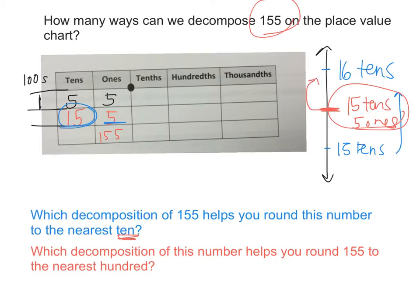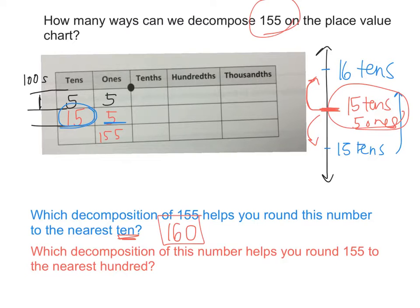Is one hundred fifty-five closer to sixteen tens or closer to fifteen tens? Neither — it's right in the middle. But what do we do for rounding? We know if it's right in the middle, we round it up. So fifteen tens and five ones needs to go up to sixteen tens. Rounded to the nearest ten, it would be sixteen tens — otherwise known as one hundred sixty. Now, what if we want to round it to the nearest hundreds place? This number line doesn't help us — we need to draw a different number line.